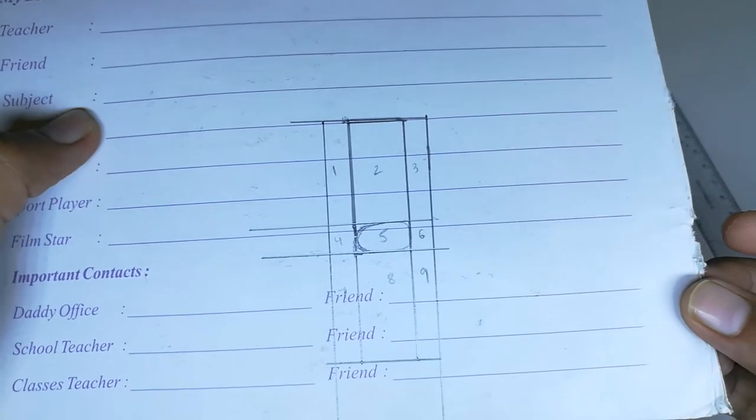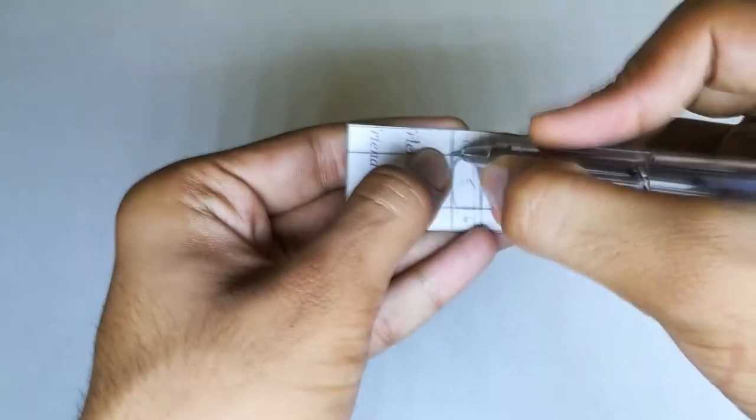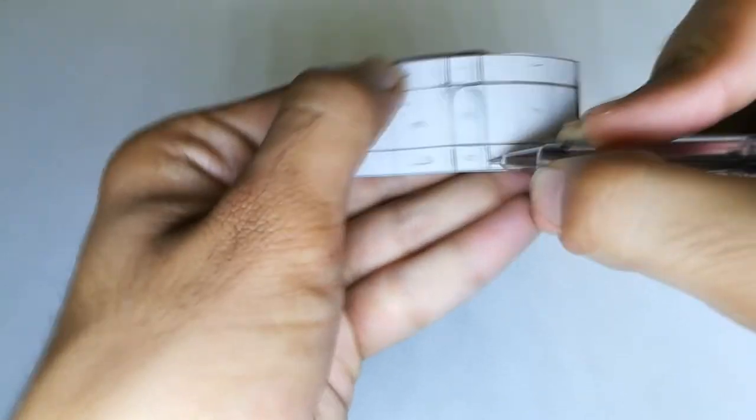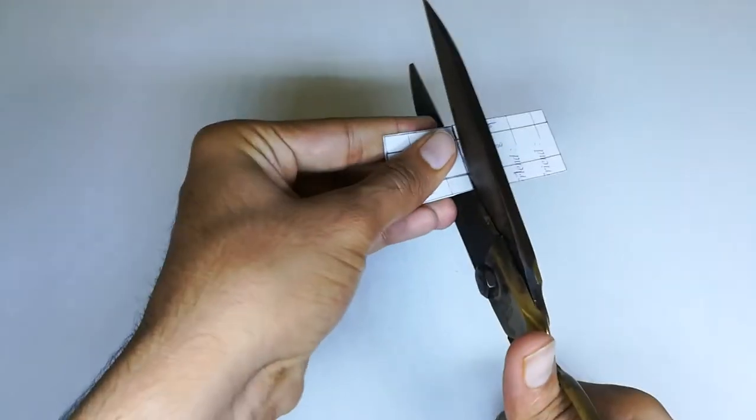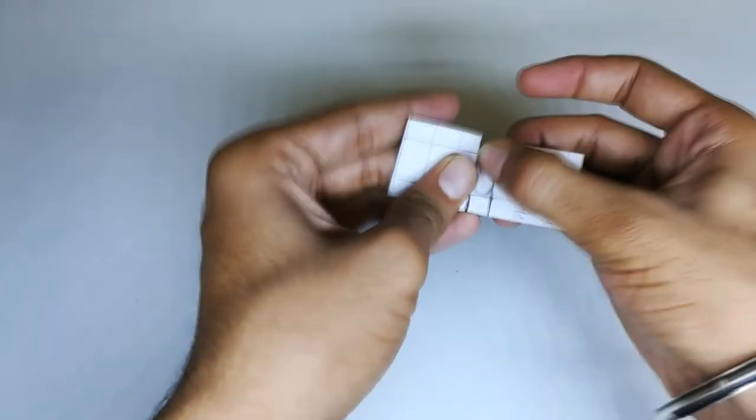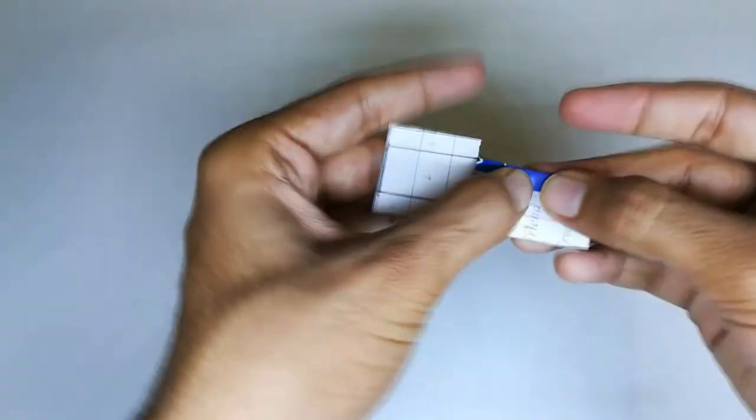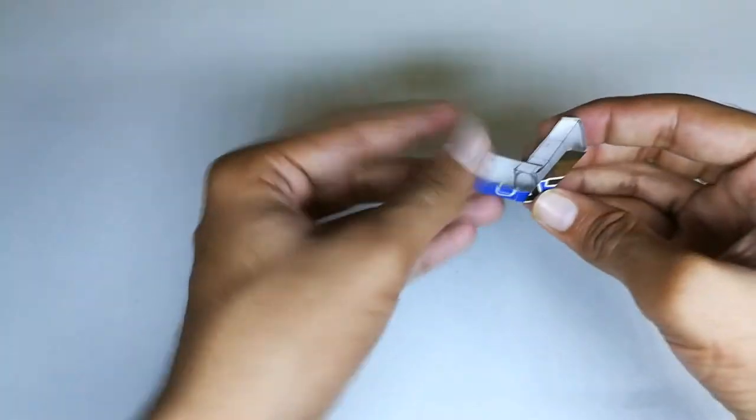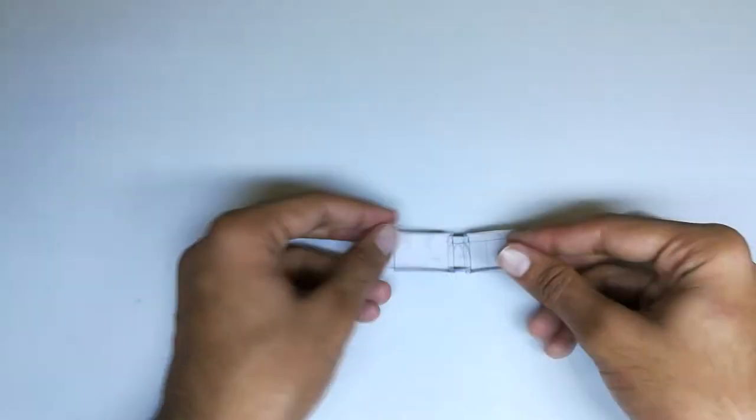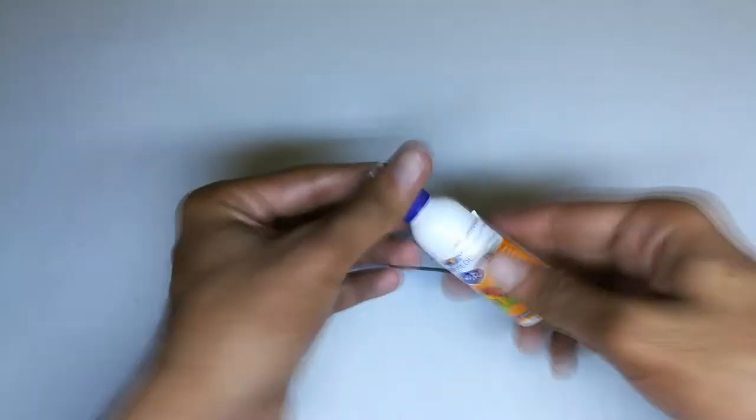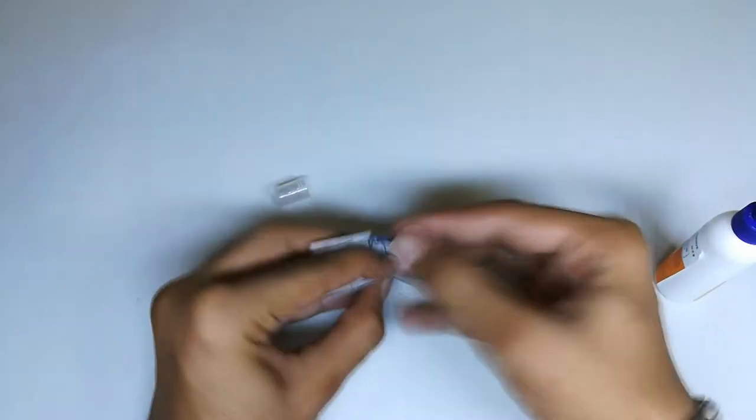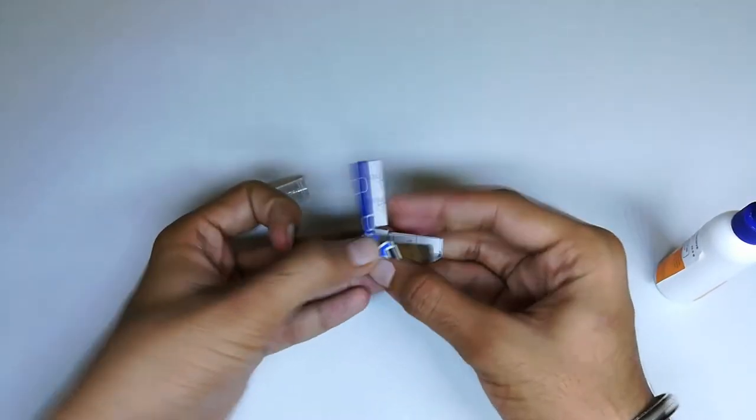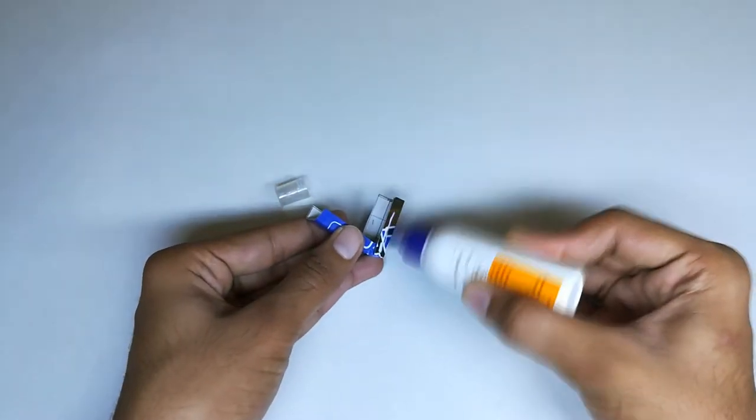In total you should get 9 rectangles. Cut it out. Now cut the edges which are marked with pen. Fold it to get the box-like structure. Stick it properly.